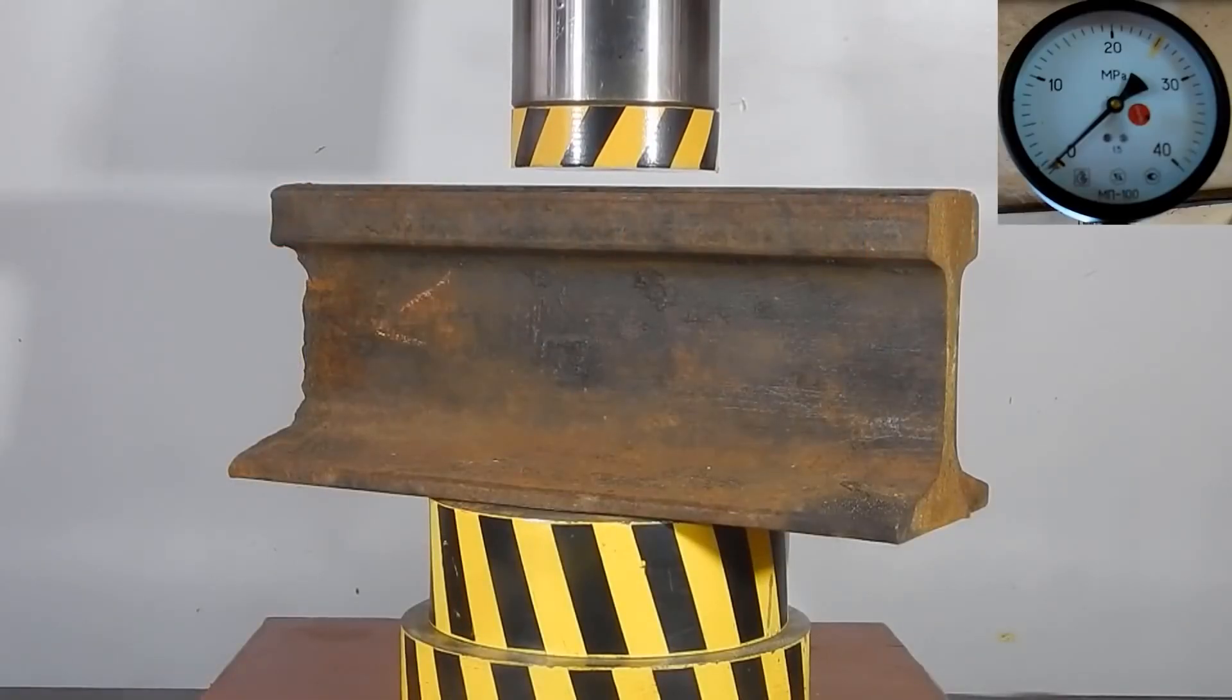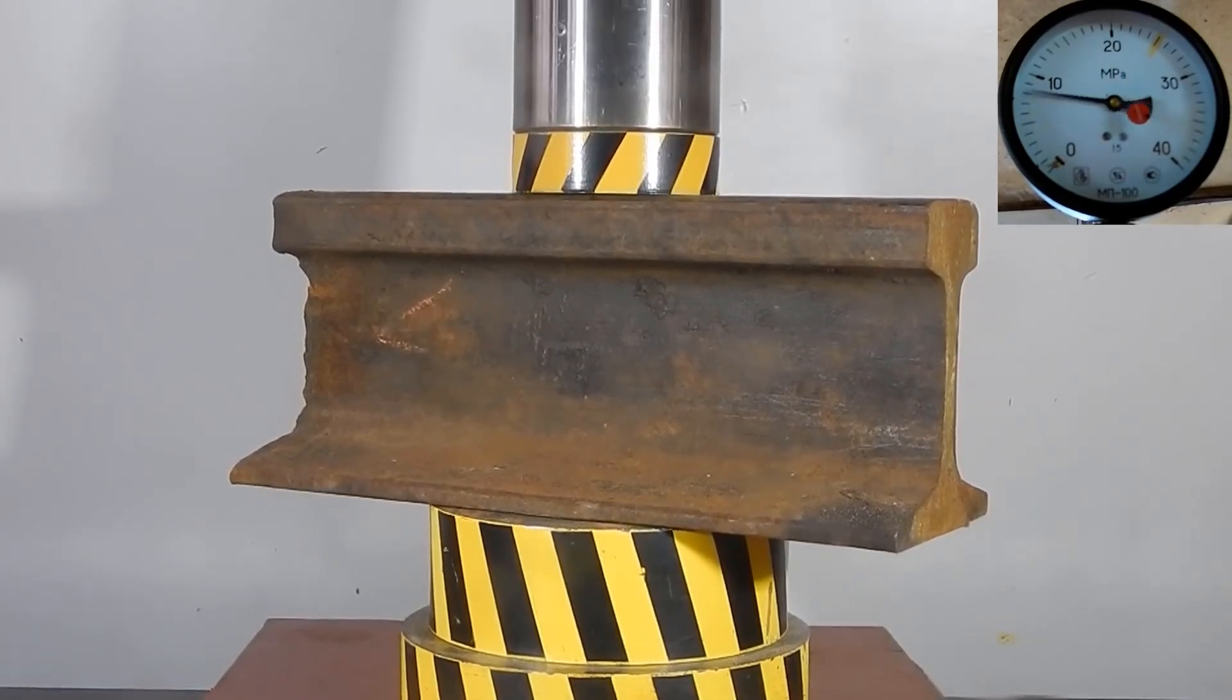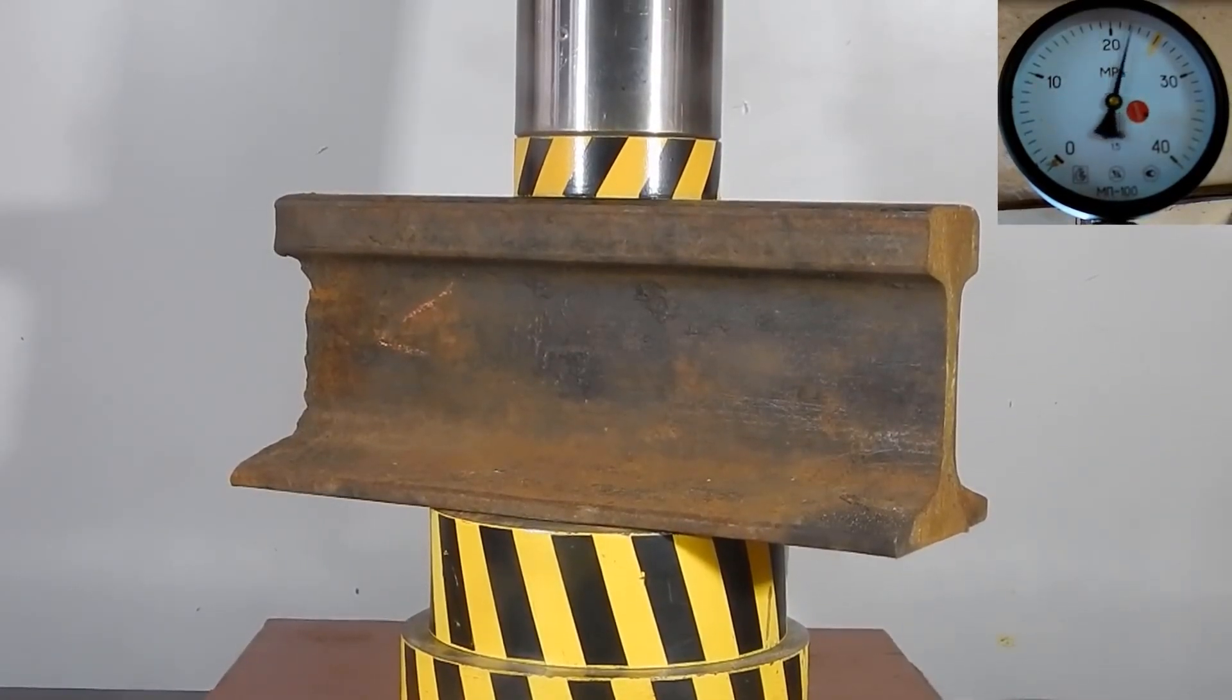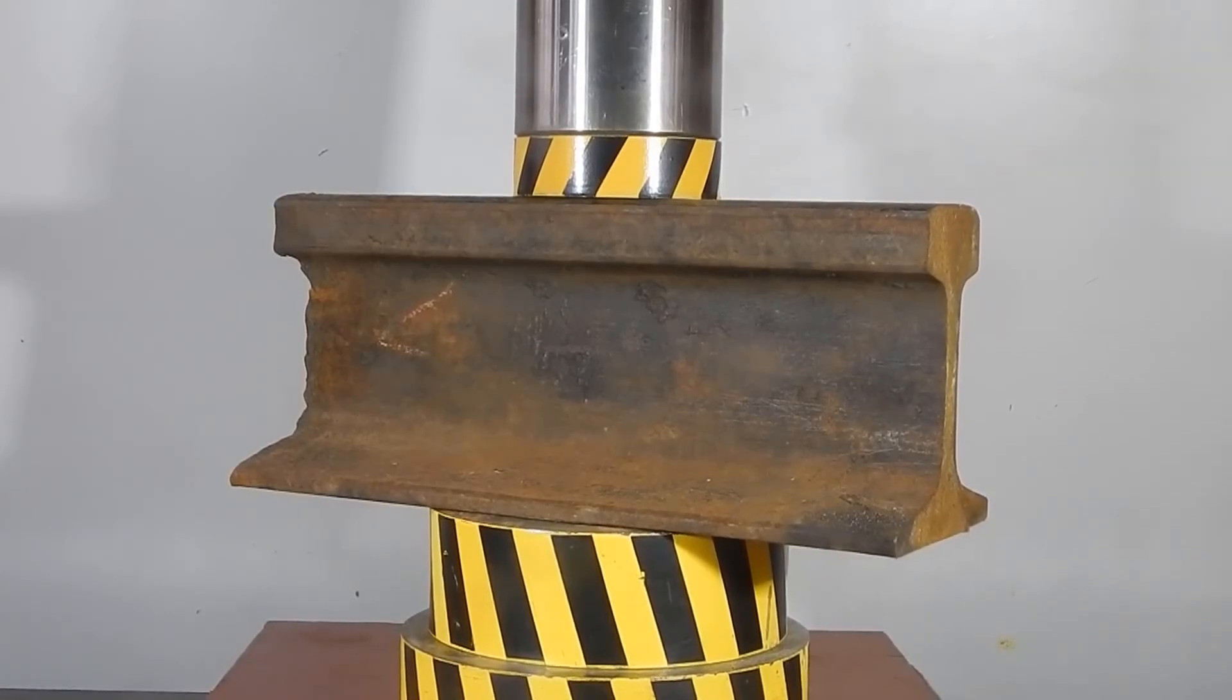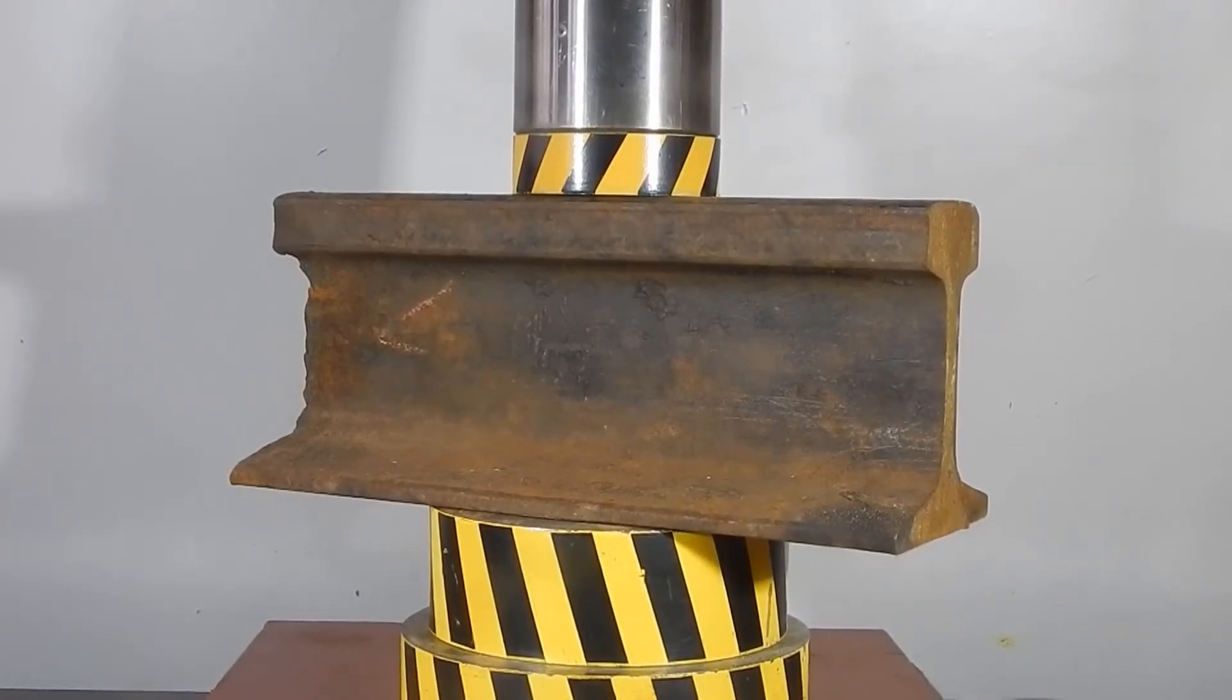Once we tried using a hundred ton hydraulic press to crush a railway rail, but as it turned out, the rail is not such an indestructible thing and a hundred tons is clearly not enough for this.